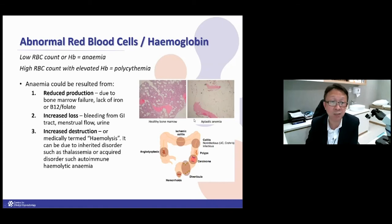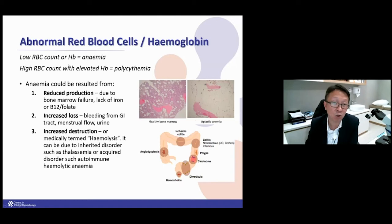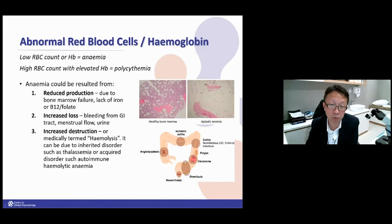Next, the third part is the red cell and hemoglobin. Hemoglobin can be too high or too low. Low hemoglobin is very commonly called anemia; high hemoglobin is called polycythemia. Anemia can result from reduced production, increased loss due to bleeding, or increased destruction — something destroying the red cells.